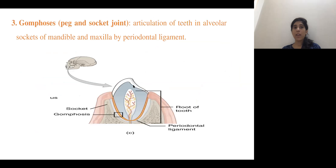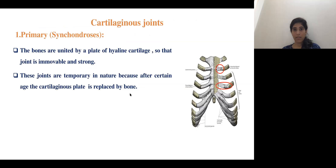Gomphosis is also called a peg and socket type of joint. An example is the articulation of teeth in the alveolar socket of the mandible and maxilla by the periodontal ligament.